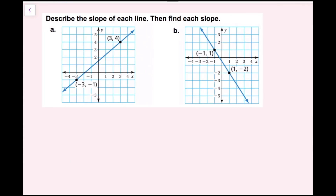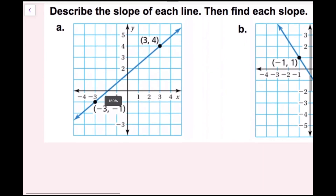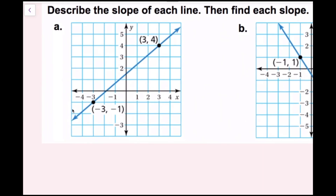Describe the slope of each line, then find each slope. For the first one, I notice that my y value is increasing as my x value is increasing — my y value is going up as I go from left to right. So that means I have a positive slope here. Now I need to find the slope. For part a, I'm going to find it using rise over run on the graph. I'm going to start with this point on the bottom, negative three, negative one.